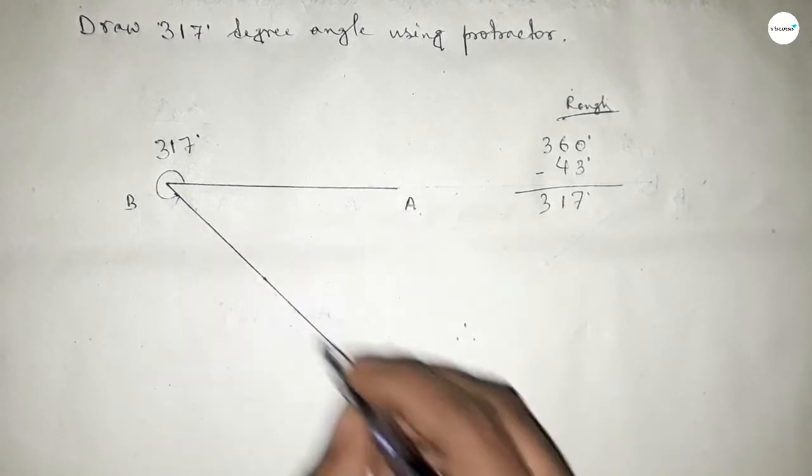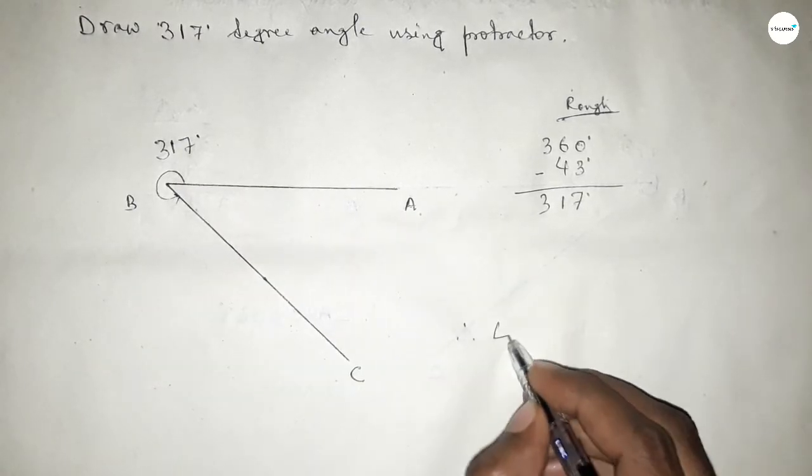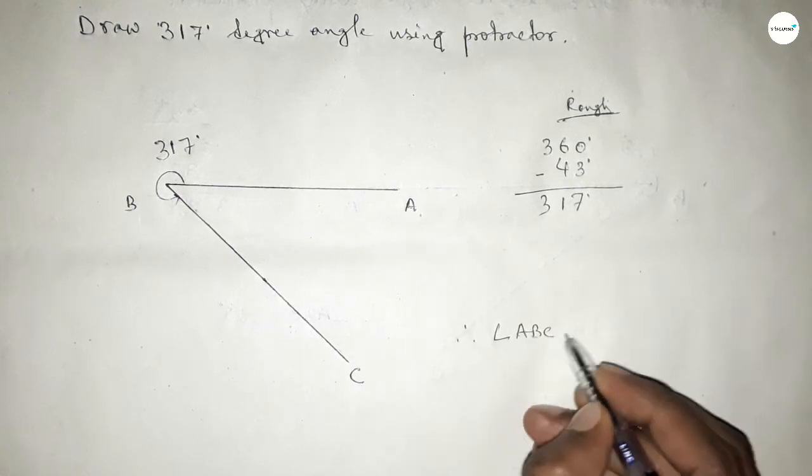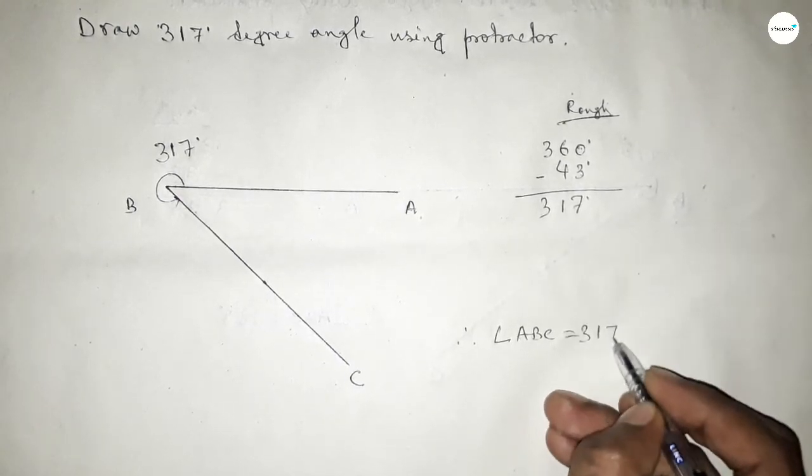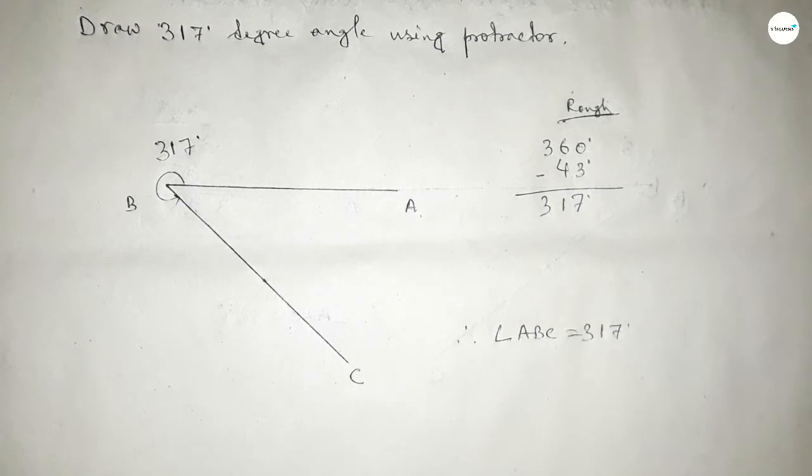Therefore, angle ABC equals 317 degrees. That's all. Thanks for watching. If this video is helpful to you, then please share it with your friends.